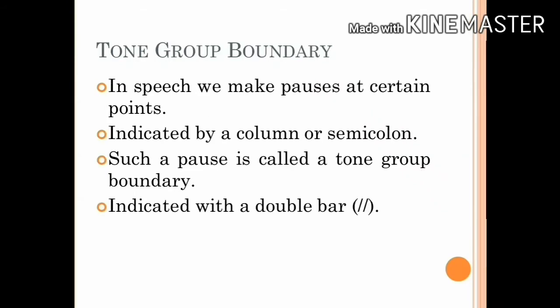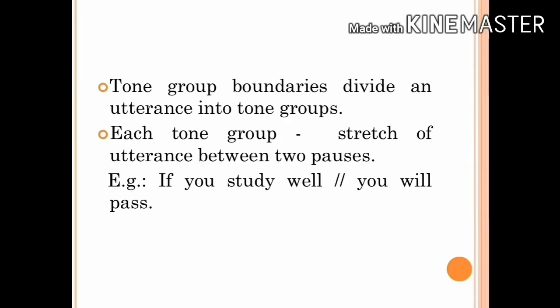Now let's take a look at what a tone group boundary is. When we speak, we make pauses at certain points. For example, consider the sentence: The secretary said, let me thank all of you. When we pronounce this sentence, we pause after 'said.' Such a pause may be called a tone group boundary. The tone group boundary is indicated with a double bar. Tone group boundaries divide an utterance into tone groups. Each tone group is a stretch of utterance between two pauses—that is, two tone group boundaries.